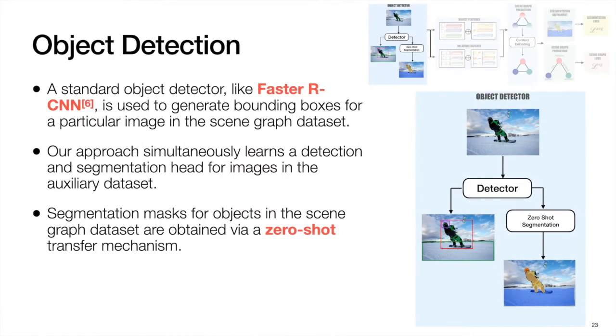Similar to existing works, we pre-train an object detector to provide bounding boxes for images in Visual Genome. Our approach additionally learns a segmentation head for images in the MS COCO dataset. As the object classes are different in the two datasets, a zero-shot transfer mechanism is employed in order to obtain segmentation masks for objects in Visual Genome.